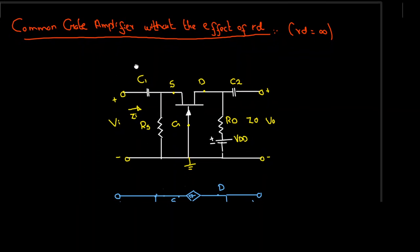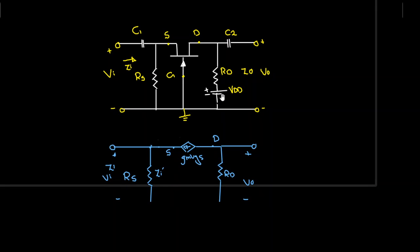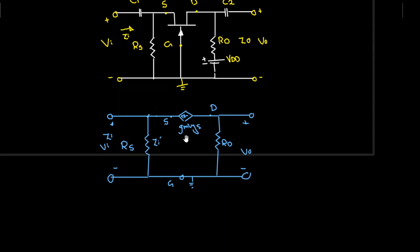Bismillahirrahmanirrahim. Assalamu alaikum. Welcome to Technically Explained. In this video we are going to study the common gate amplifier again, but this time without the effect of resistance RD, so RD will be assumed to be infinite. This is my common gate configuration where input is applied to the source terminal and output is taken from the drain terminal. For AC analysis, C1 and C2 will be shorted out, as well as the DC voltage source, giving us a simplified diagram. RD is assumed to be infinite.